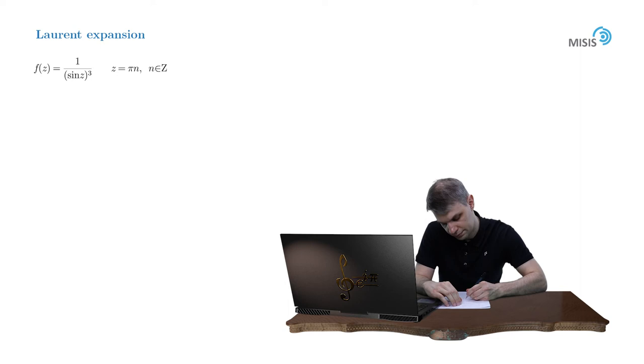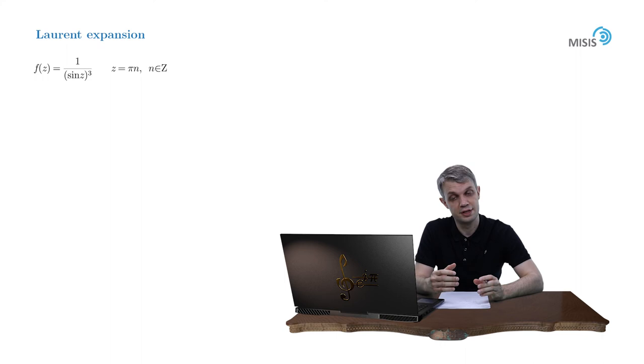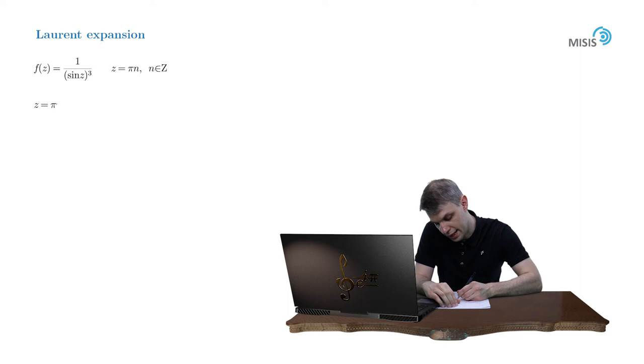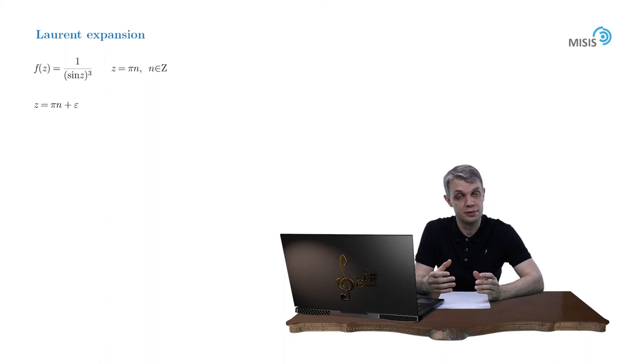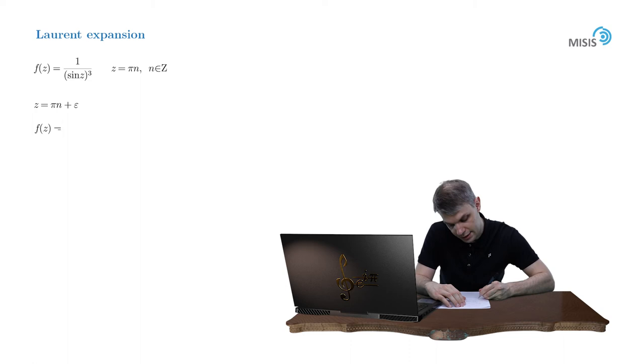And here we proceed slightly differently. First of all, for simplicity, let's shift our expansion variable. So we introduce new variable epsilon as z equals pi n plus epsilon. So in terms of epsilon, we'll build a Laurent expansion centered at the origin. Now we plug in this change into our initial function and simplify the fraction. Sine cubed of (pi n plus epsilon) is simply negative 1 to the power of n divided by sine cubed of epsilon.